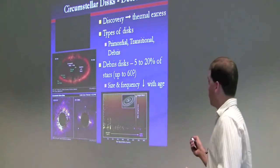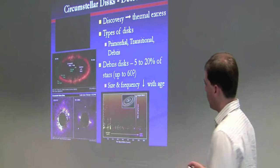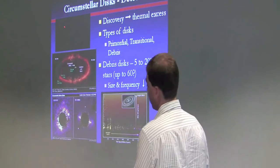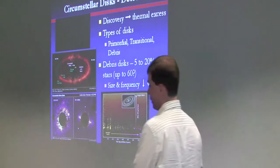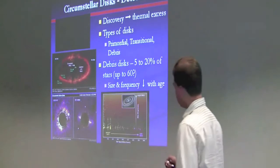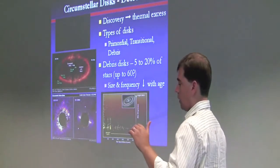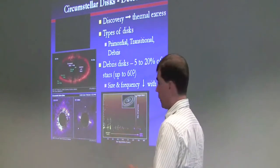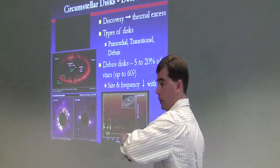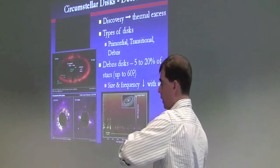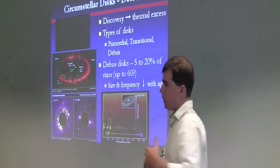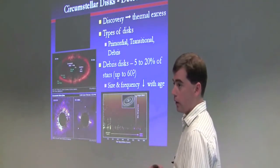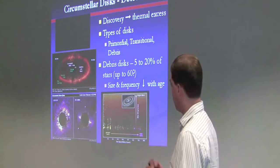So, circumstellar disks, first discovered just by the thermal excess. If you just measure the flux from a star at different wavelengths and follow the expected flux from just the star itself and the photosphere itself, a number of stars have excess at thermal wavelengths. And so that was the sign that there were disks, the first sign that there were disks around other stars.